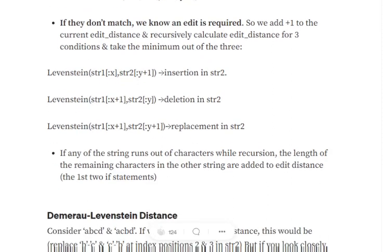If any of the strings runs out of characters while recursion, there would be a point where we would be reaching the end of the strings. The length of the remaining characters of the other string. Assume that one of the strings has 7 characters, other has 9 characters.